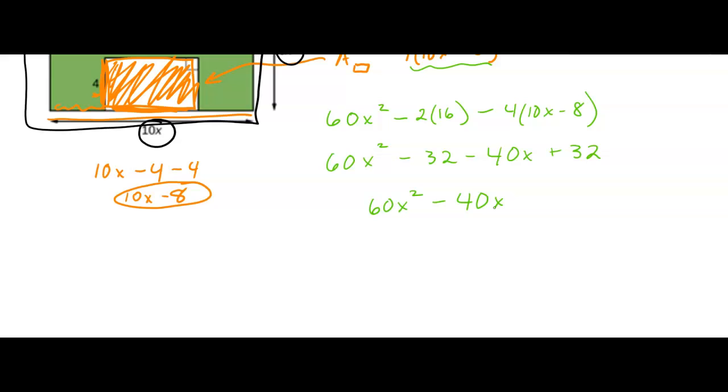But you could also write this as 20x times (3x - 2), because if you distributed that would give you 60x² and that would give you 40x. So this is one way to write the expression, this is another way. This way is considered factored—the bottom one is factored because it's in terms of multiplication.